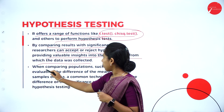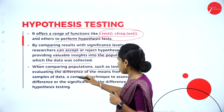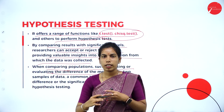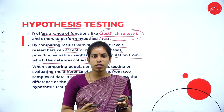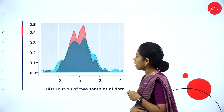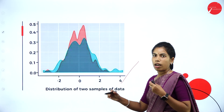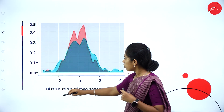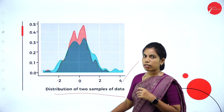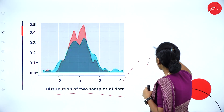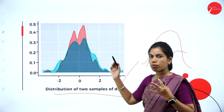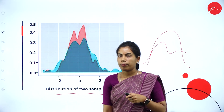When comparing populations — such as evaluating the difference in means from two samples of data — we can use hypothesis testing as a model. Here you can see how hypothesis testing works with two samples of data in graphical representation: graph one will be generated like this and graph two will be generated like this.